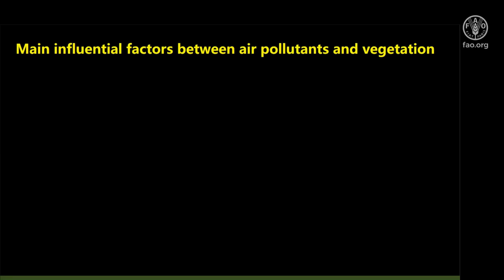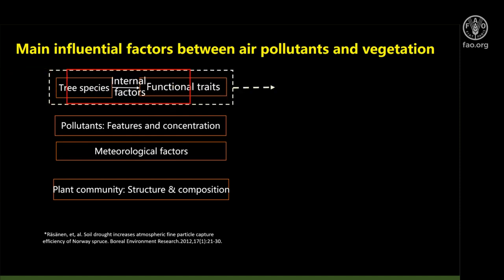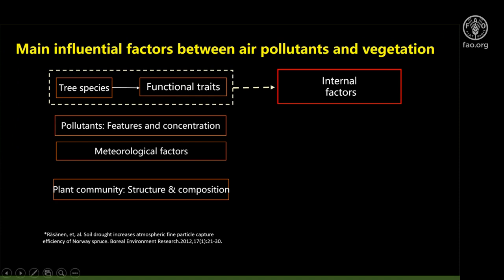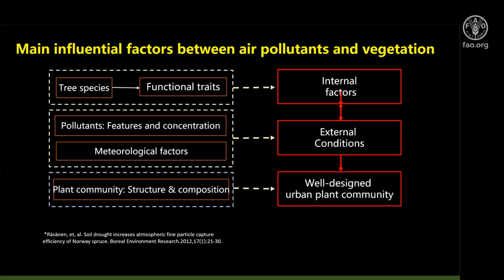What are the main influencing factors between air pollutants and vegetation? A study can quote four aspects: tree species, pollutants, meteorological factors, and plant community. Tree species refers to the functional traits of trees and leaves, which we can call internal factors. These two interact with each other at the surface of leaves and branches. With a well-designed plant community, that's how we can have a cleaner city and promote human well-being.